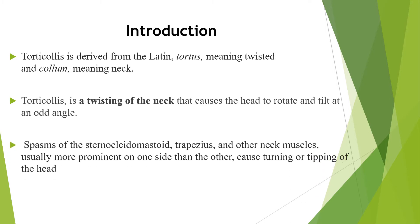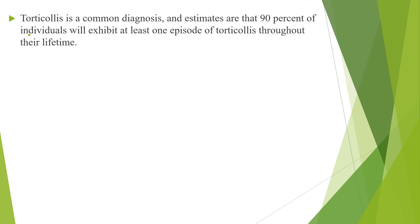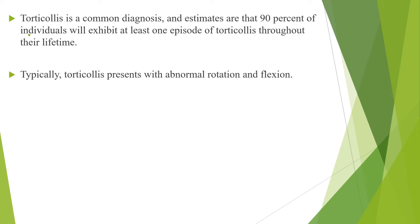Spasms of the sternocleidomastoid, trapezius, and other neck muscles — usually more prominent on one side than the other — cause turning or tipping of the head. Torticollis is a common diagnosis, and it is estimated that 90% of individuals will exhibit at least one episode of torticollis throughout their lifetime. Typically, torticollis presents with abnormal rotation and flexion.